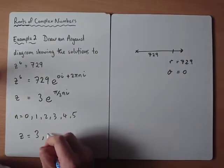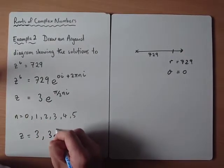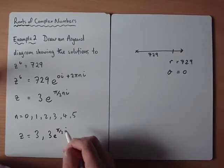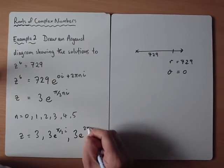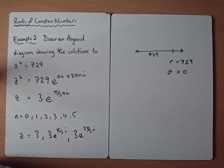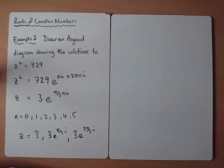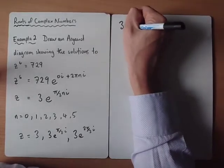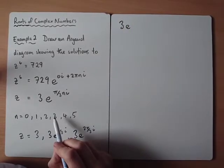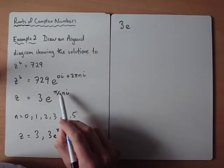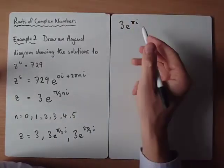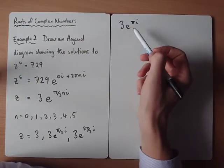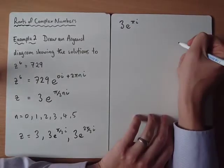So n=1, so that would be 3e to the π over 3i. 3e to the 2π over 3i. If we sub 3 in, we get 3π over 3, also known as π. Now be careful with this one, and we'll see what I mean when we draw it.